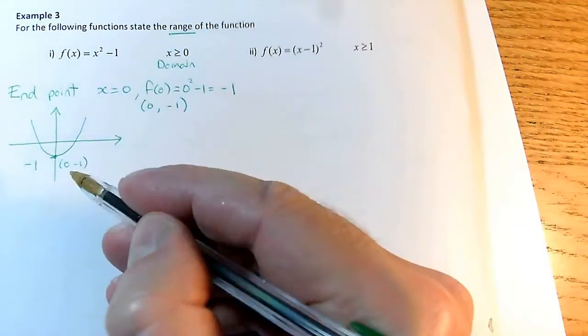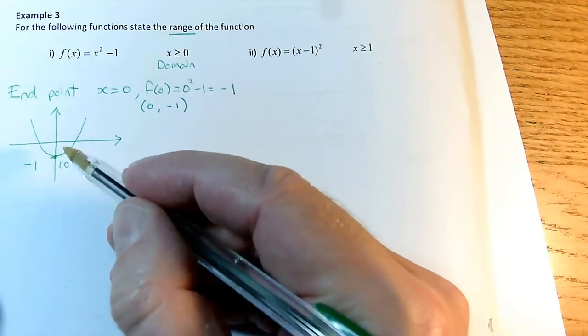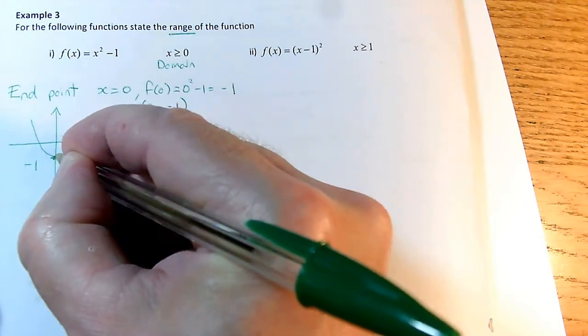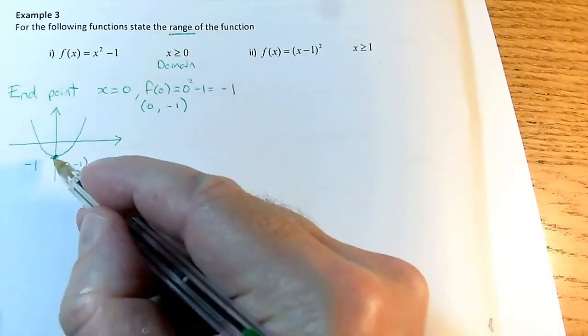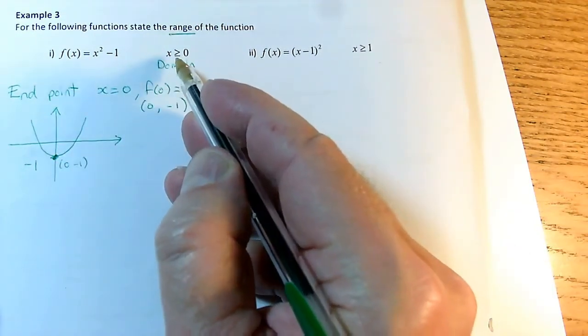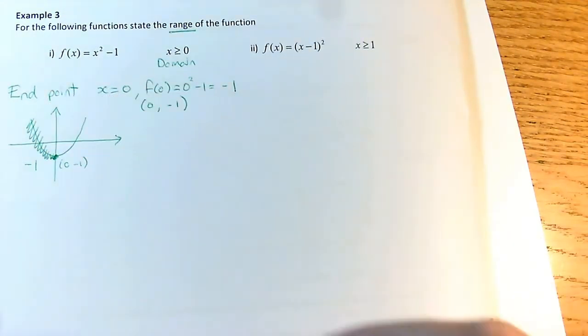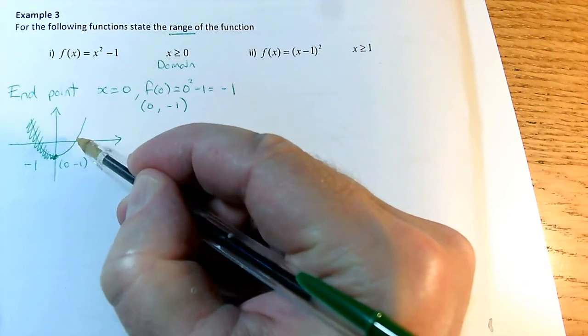But my graph is not yet correct because I've got only values of x greater than or equal to 0. So this point here has now got the status of an endpoint and I'm not allowed to have any x values that are less than 0. So this part of the graph I'm going to get rid of, and the actual part of the graph I've got is this.